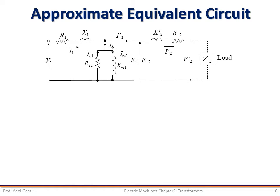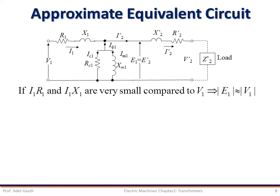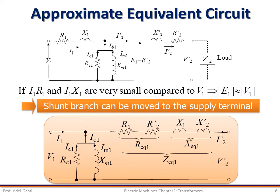Notice that in this transformer equivalent circuit, the parallel branch in the middle makes it a bit complex to find the relation between input and output variables — current and voltages. In some cases, for quick analysis, if the voltage drop in the primary winding is negligible compared to the terminal voltage, then we can approximate the terminal voltage V1 to the induced EMF E1. Thus, we can move the shunt branch from the middle to the terminals of the primary side, as shown in this figure.